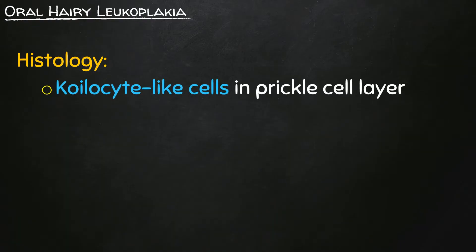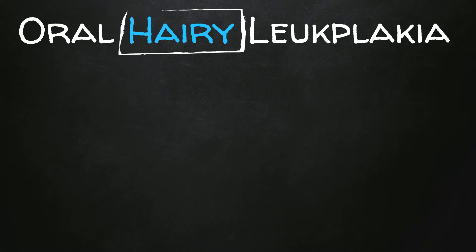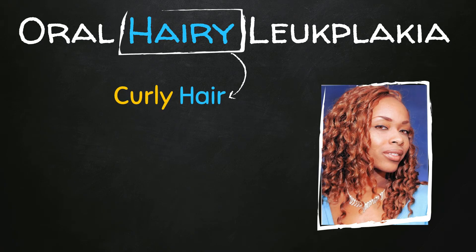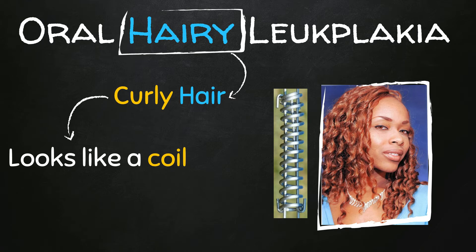Histology: coilocyte-like cells in the prickle cell layer are seen in the histology of oral hairy leukoplakia. How can we relate coilocyte to oral hairy leukoplakia? Again we're looking at the word hairy, but here it means curly hair. Now what does curly hair resemble? It resembles a coil — it looks like a coil. So we can say that curly hair is coily hair, which means coilocyte. So oral hairy leukoplakia: hair, remember curly hair, coils — coilocyte.